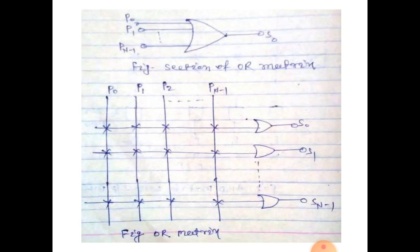So, I see the P0, P1, P2, PN minus 1, all N inputs is connected to OR gates and gate outputs S0, S1, SN minus 1. This is the output of the OR gates.